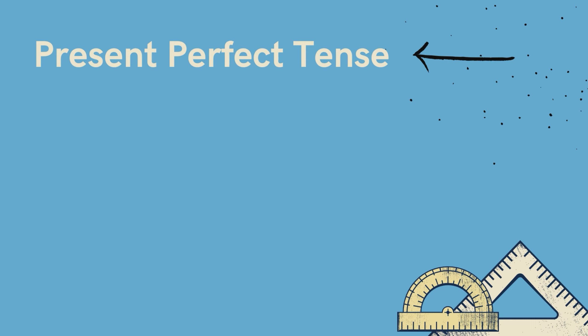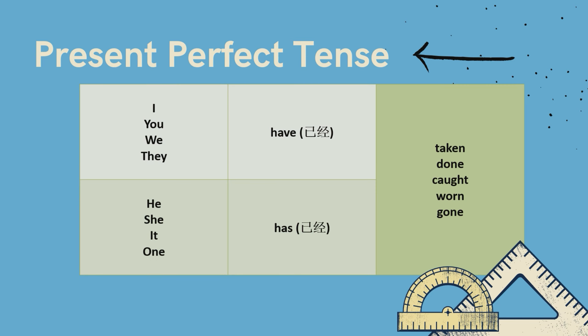Write the title 'Present Perfect Tense' into your exercise book. Present perfect tense uses 'have' and 'has' with the past participle verb: taken, done, caught, worn, and gone. So you say 'I have taken', 'they have done', or 'he has caught', 'it has gone'. When you use the past participle, you must remember to use 'has' or 'have'.